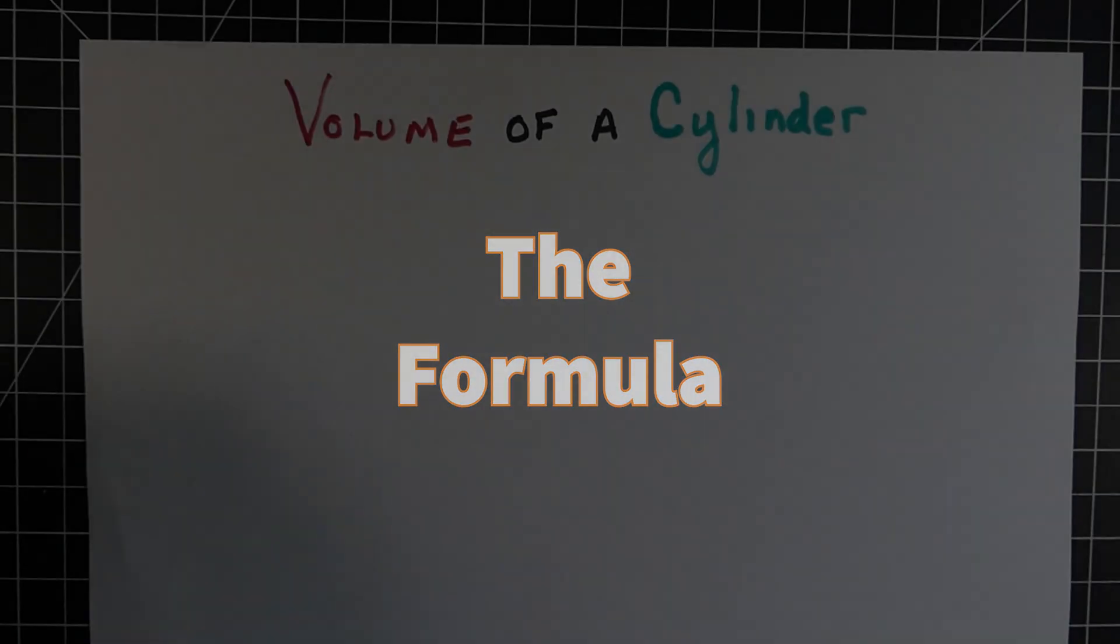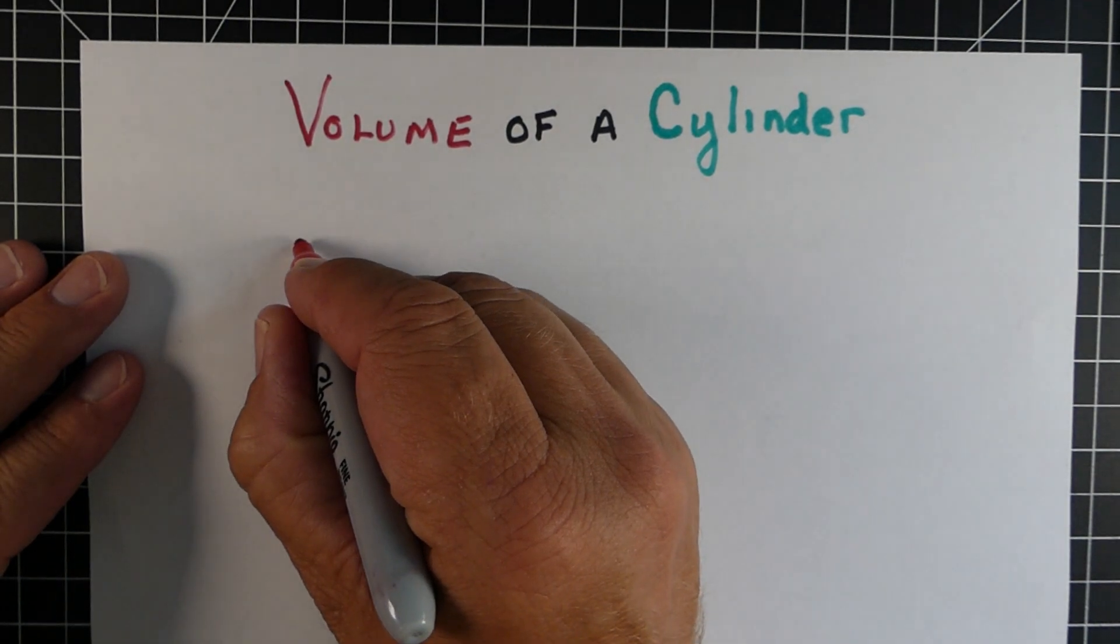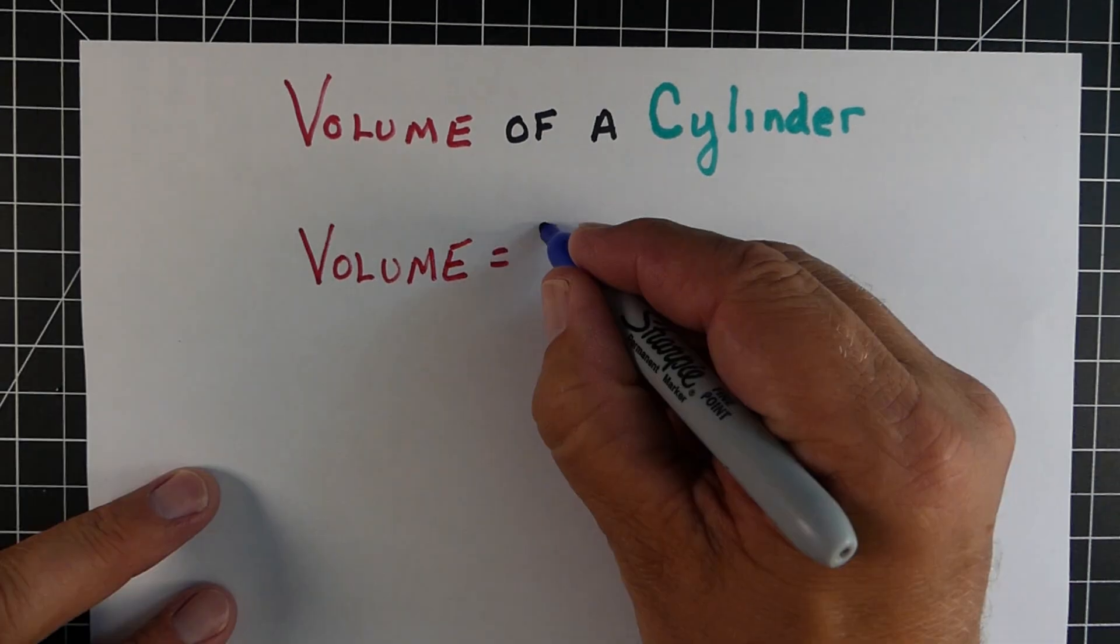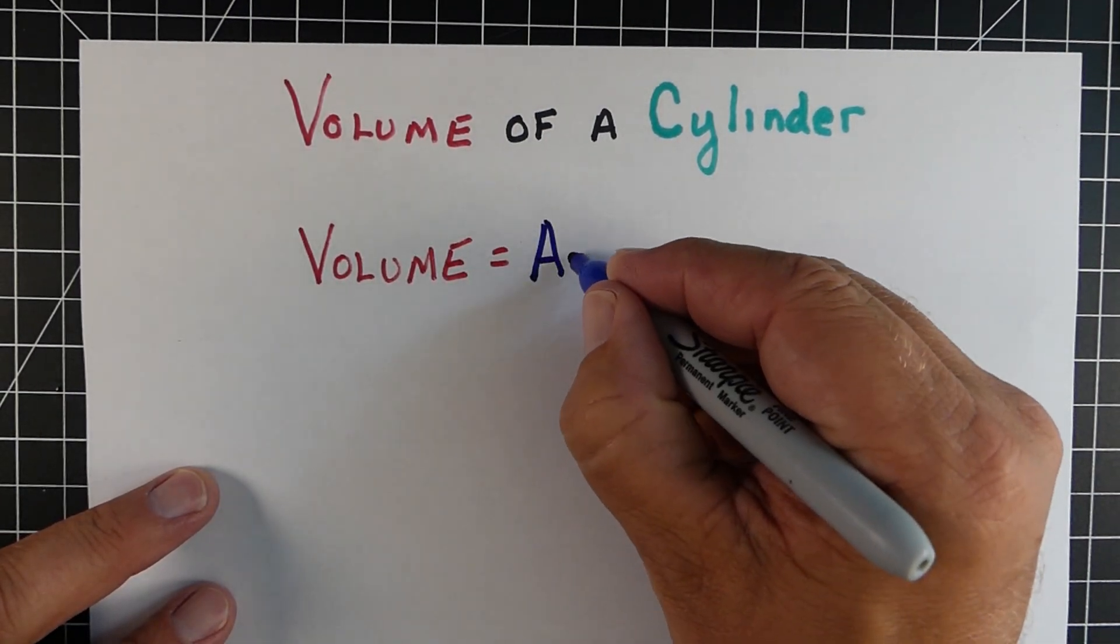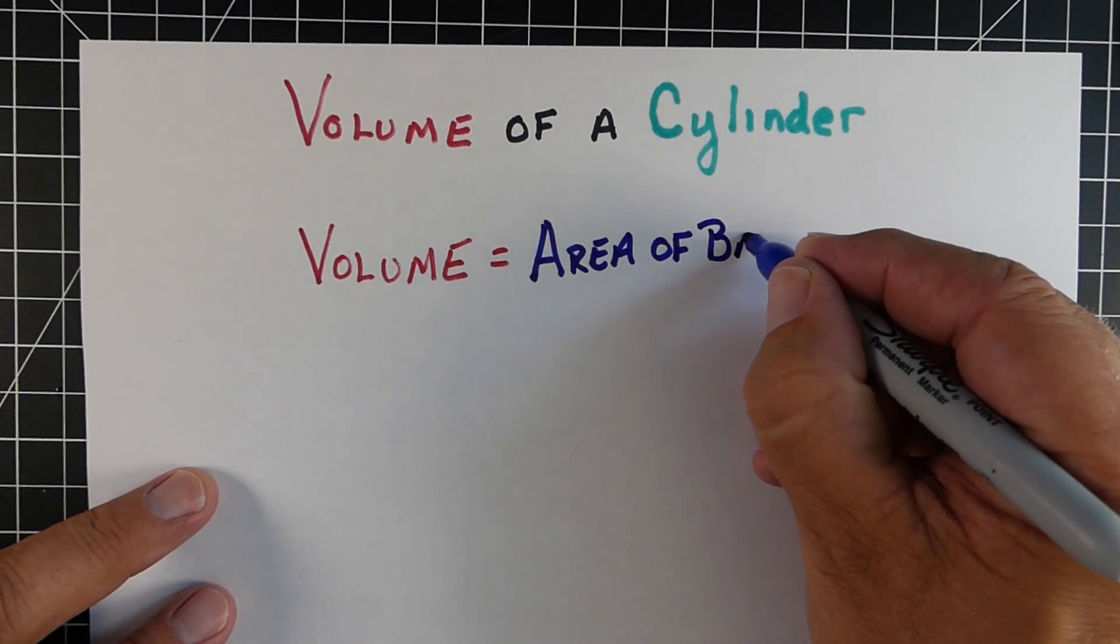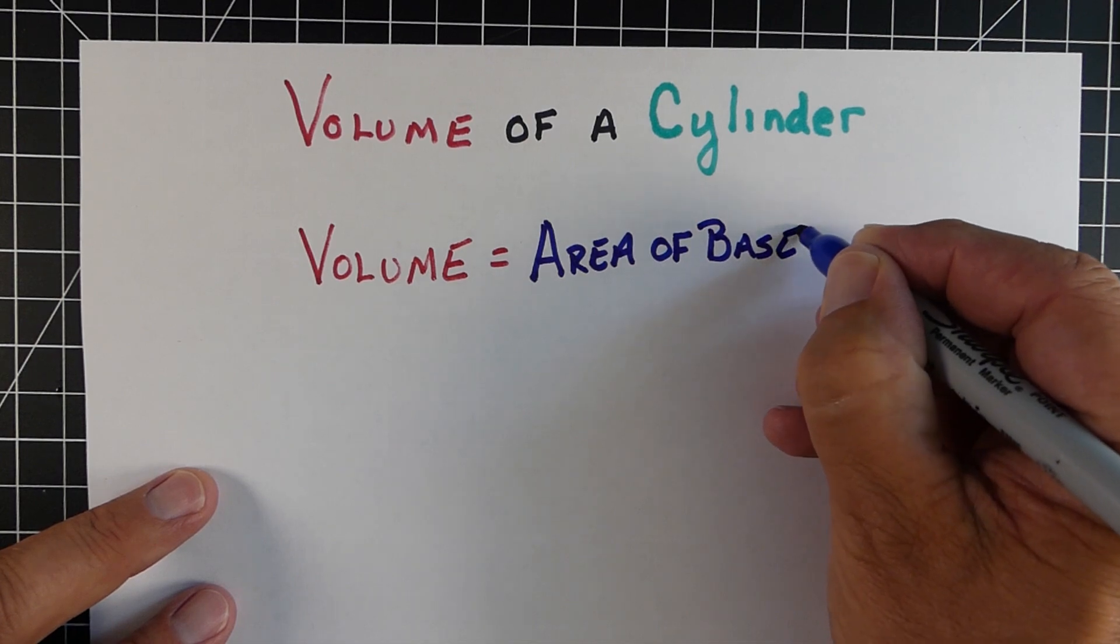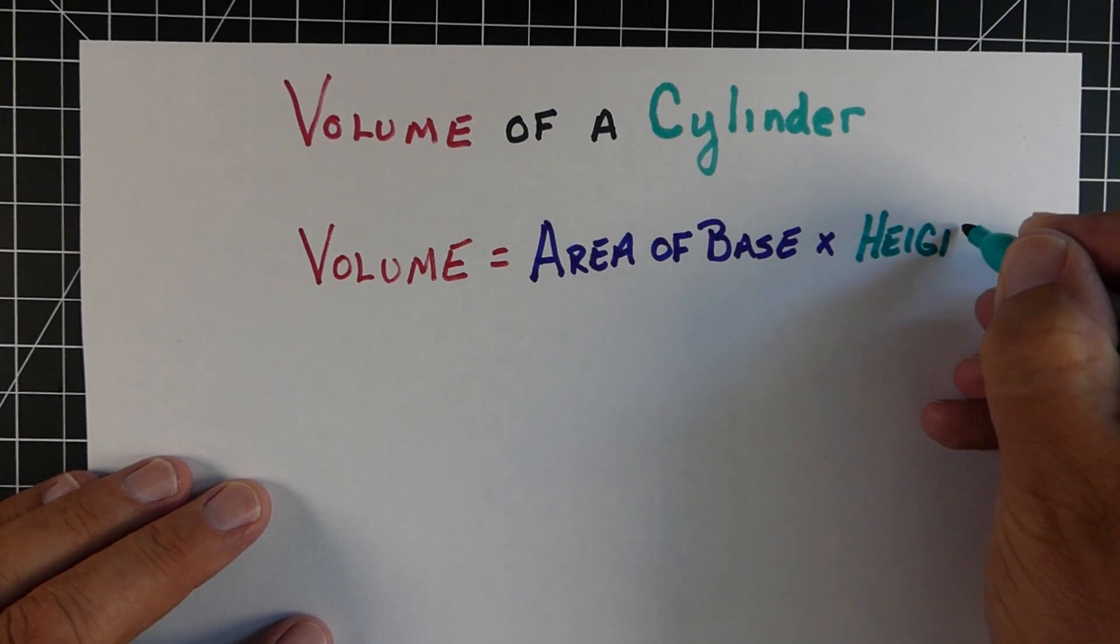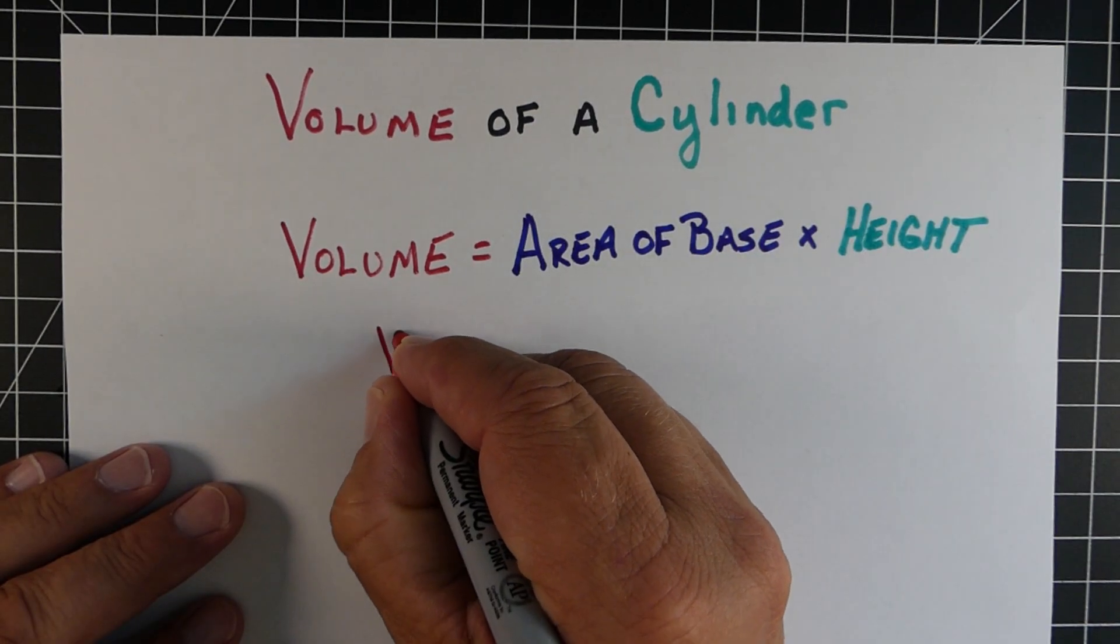Next, we need to talk about the formula to actually calculate the volume of a cylinder. Now, what we're gonna do is take the volume, or to find the volume, we're gonna take the area of the base, which we mentioned was a circle, and then we're gonna multiply that by the height of the cylinder, or the distance between the two bases.